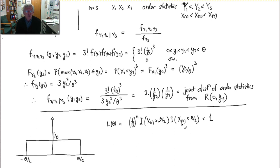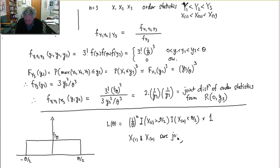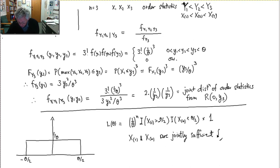For uniform on [0, θ] knowing the maximum was sufficient, because all values stopped at 0. But for uniform on [−θ/2, θ/2], values go down to −θ/2, so we need information about that as well. To get all the information relevant to theta, there are two jointly sufficient statistics: the minimum and the maximum. If we know those, there's no other useful information in the remaining numbers. In this case, x(1) the minimum and x(n) the maximum are jointly sufficient for theta.